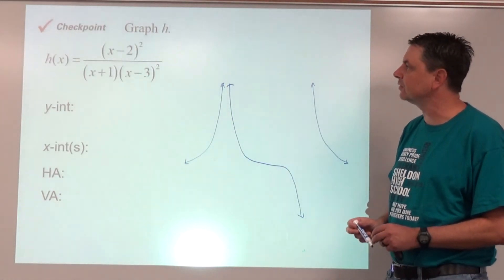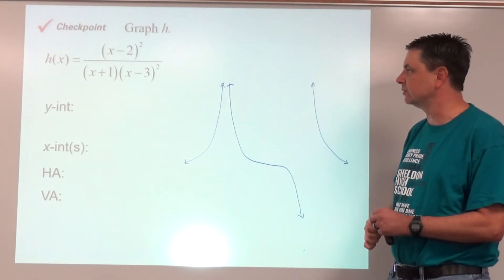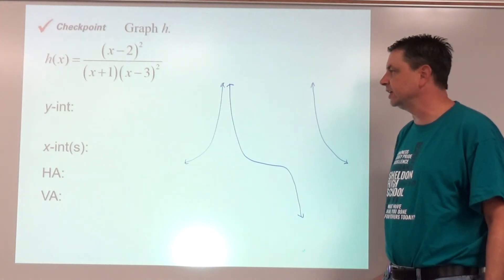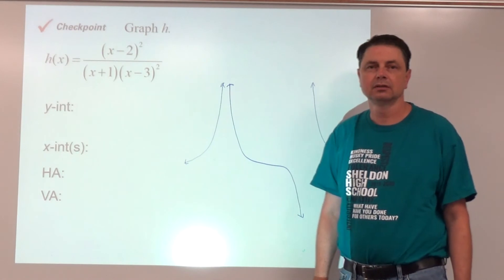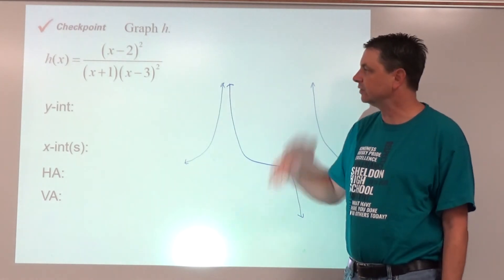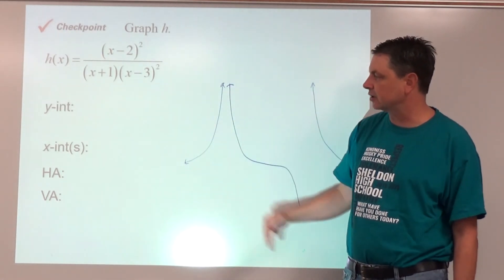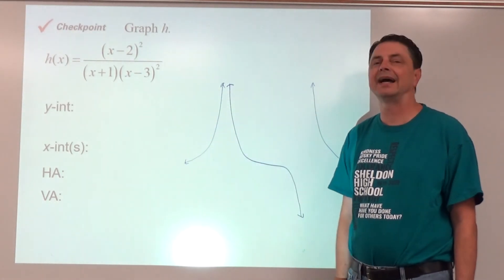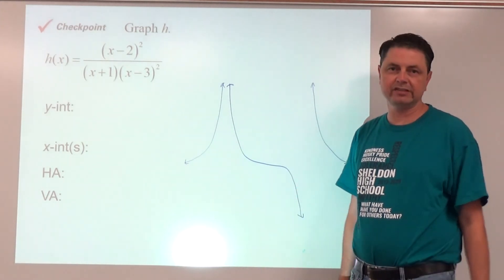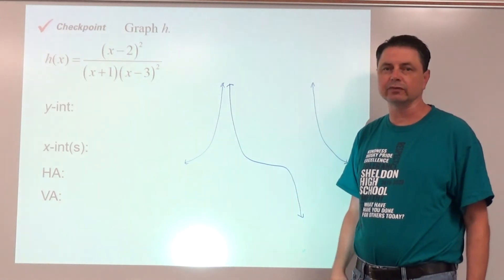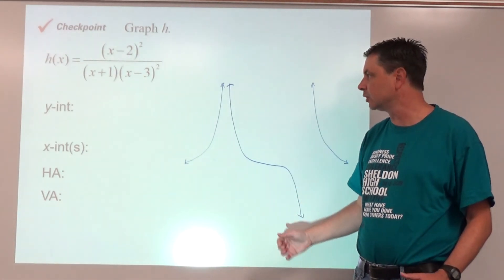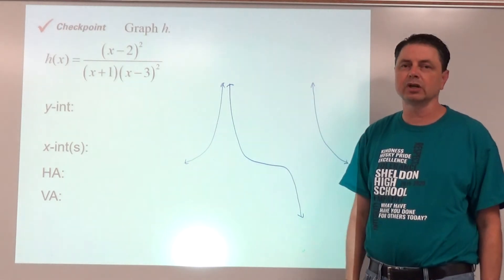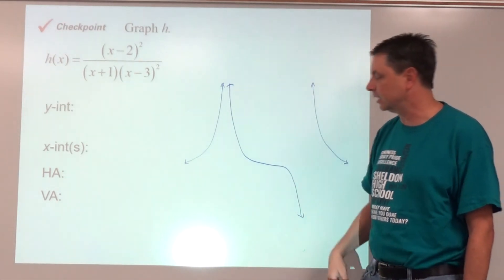Checkpoint: graph h of x. Pause the video here and see if you can find the y-intercept, x-intercept, horizontal and vertical asymptotes, and use end behavior and behavior about the asymptotes to graph it.